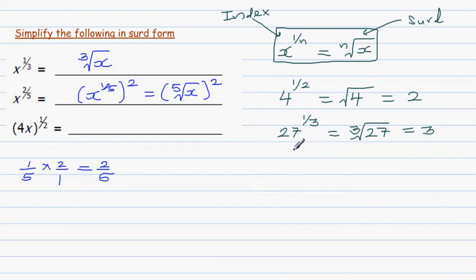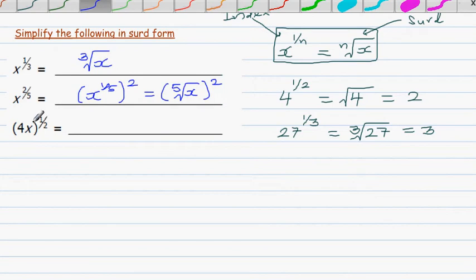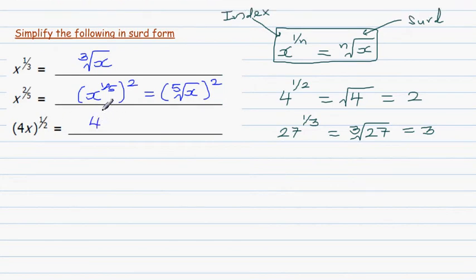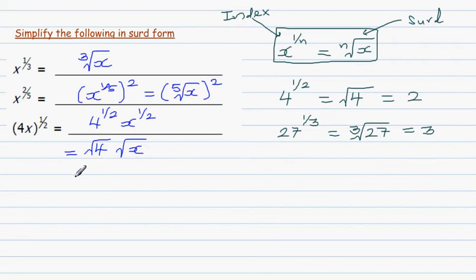Now let's write expressions in surd form. Applying the power rule, (4x) raised to the half becomes 4 raised to the half times x raised to the half. Using the rule, 4 raised to the half is the square root of 4, times the square root of x. The square root of 4 is plus or minus 2, so this gives plus or minus 2 root x. That is the surd form.